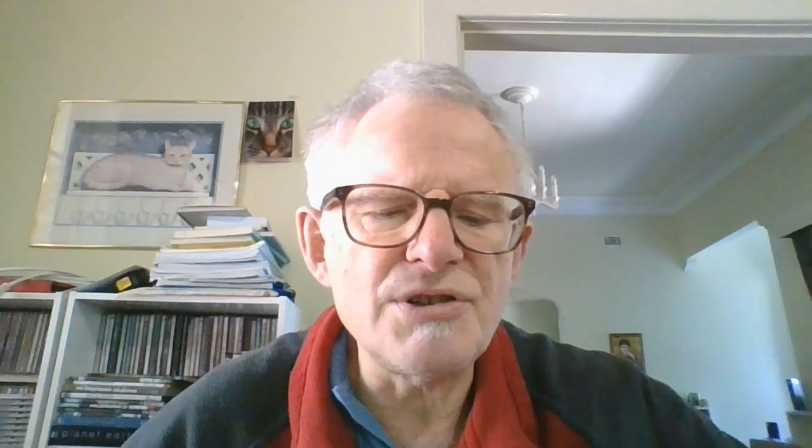The relationship at the mod 3 level is, as shown on the graphic, most things center around 2 mod 3. You can see the red arrows showing what happens when things go up, and black arrows showing what happens when things go down.